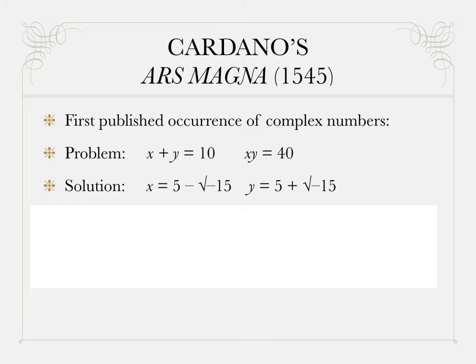And in one instance, in an exceptional instance, he encounters a problem which we would say has complex solutions only. That's this problem which is written here. It's a system of two equations, but it amounts to a quadratic equation. If you solve for y in one of these equations, plug it into the other, you obtain a quadratic equation.